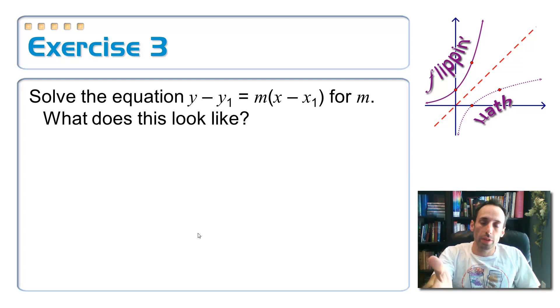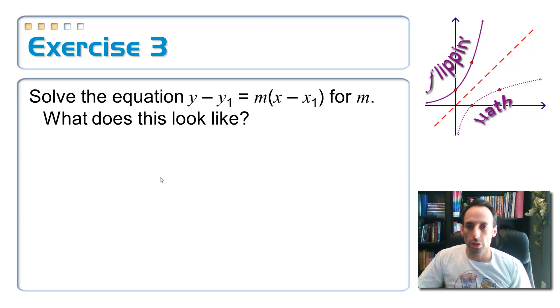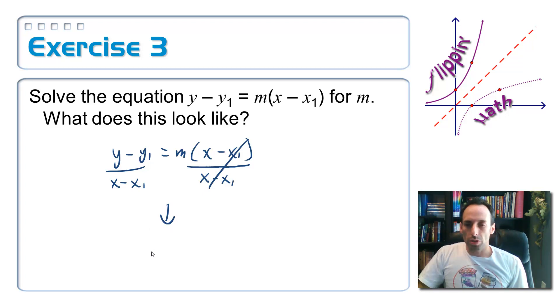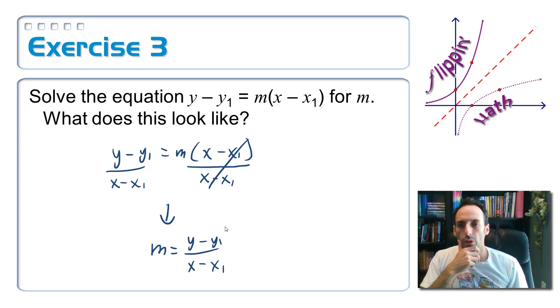So this is the point slope form of the equation. Let's go ahead and solve it for m. So y minus y one equals m times x minus x one. If I'm going to solve this for m, I'm not going to distribute m through the parentheses, because then it's going to give me two m's. I just need to get rid of the stuff around the m, which is what's being multiplied by, which is x minus x one. So if I divide both sides by that, x minus x one, those of course will cancel. And let me just switch this around, and I would have m, the slope, is equal to y minus y one over x minus x one. What does that look like? That looks like the slope formula.